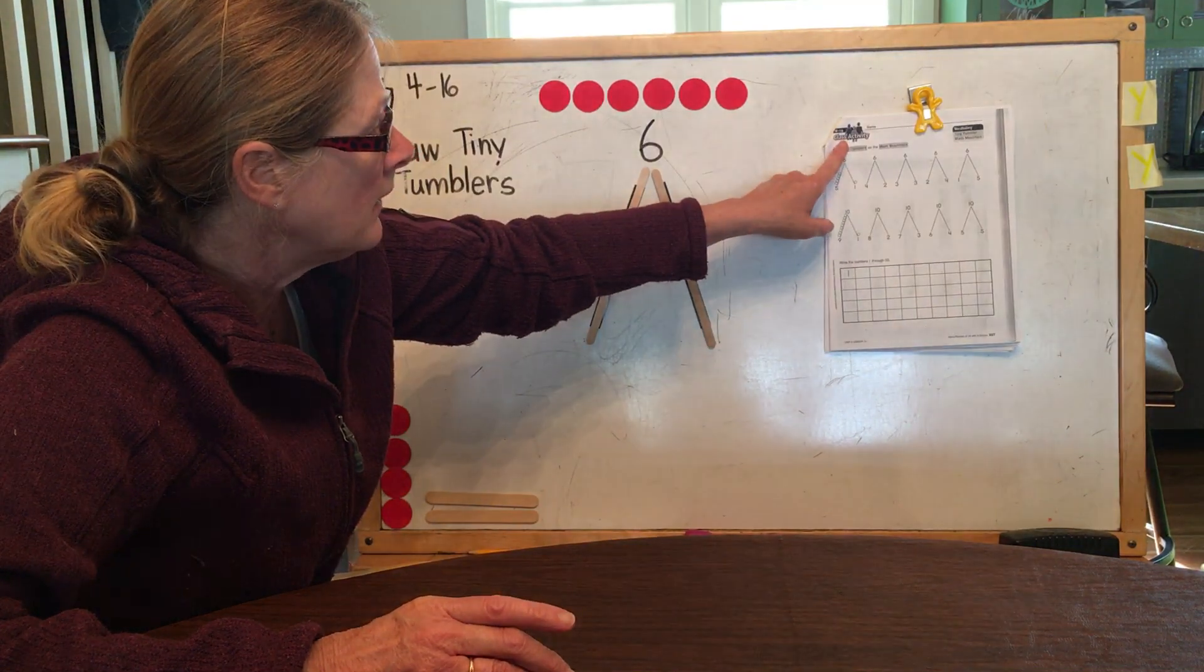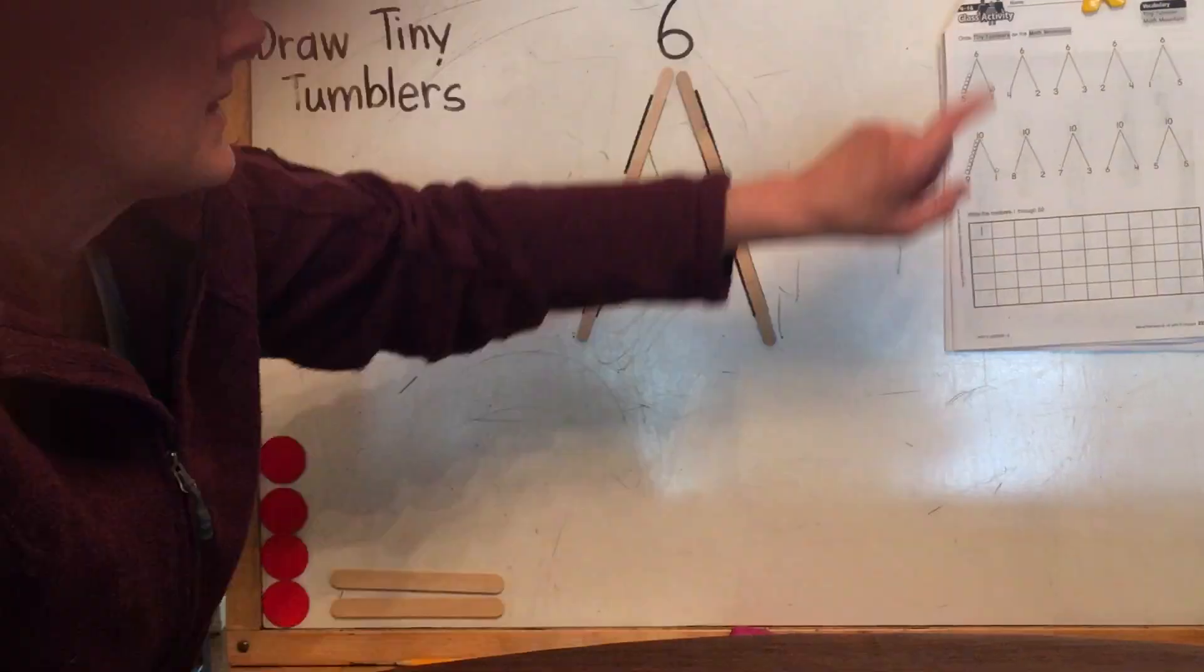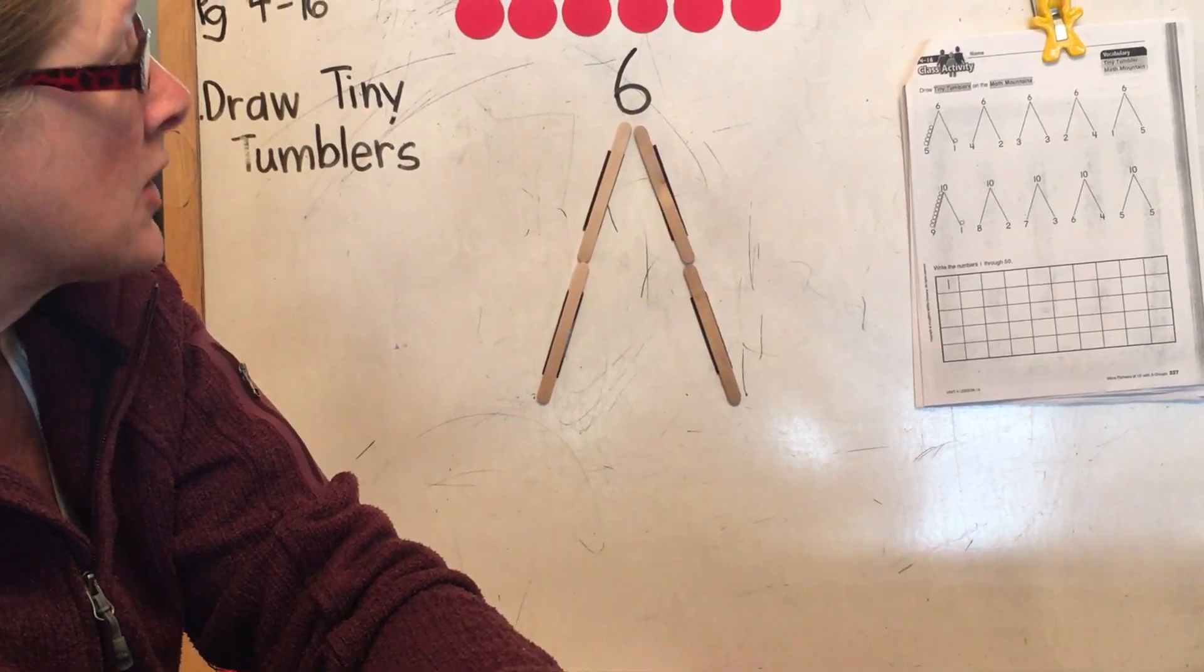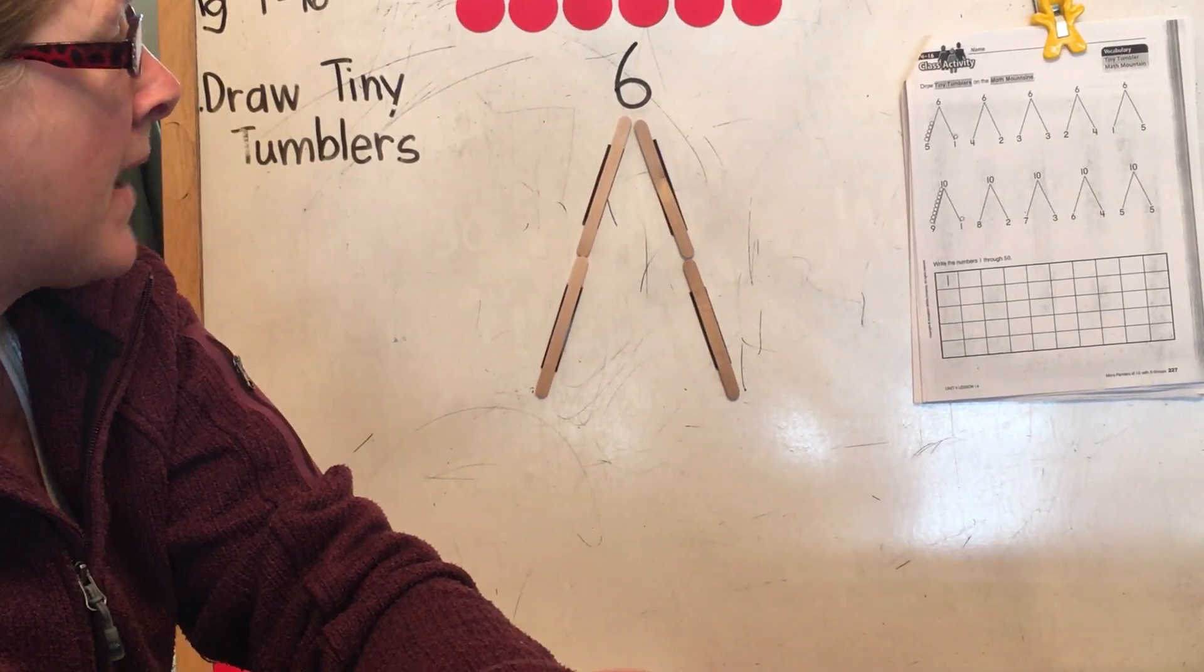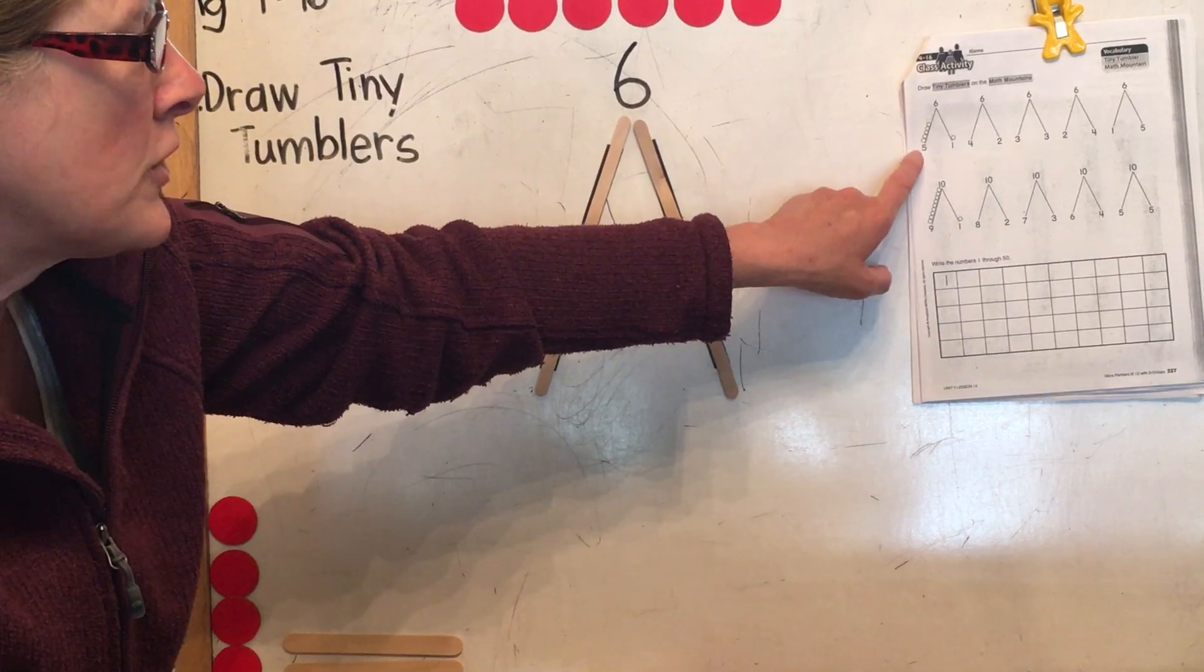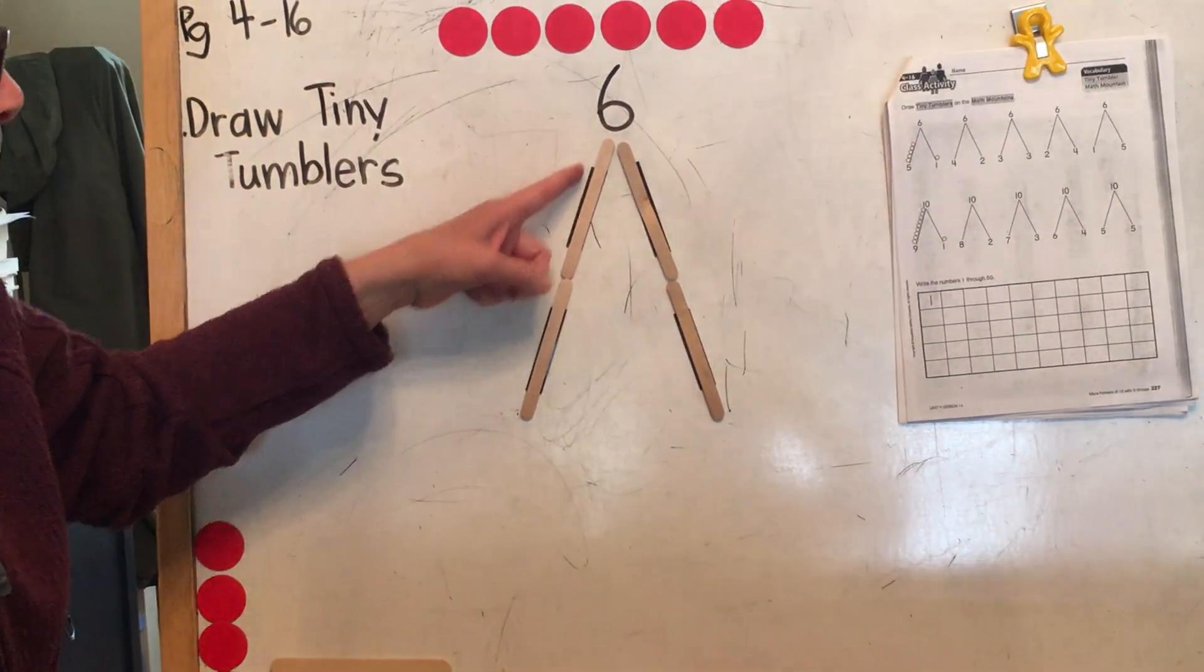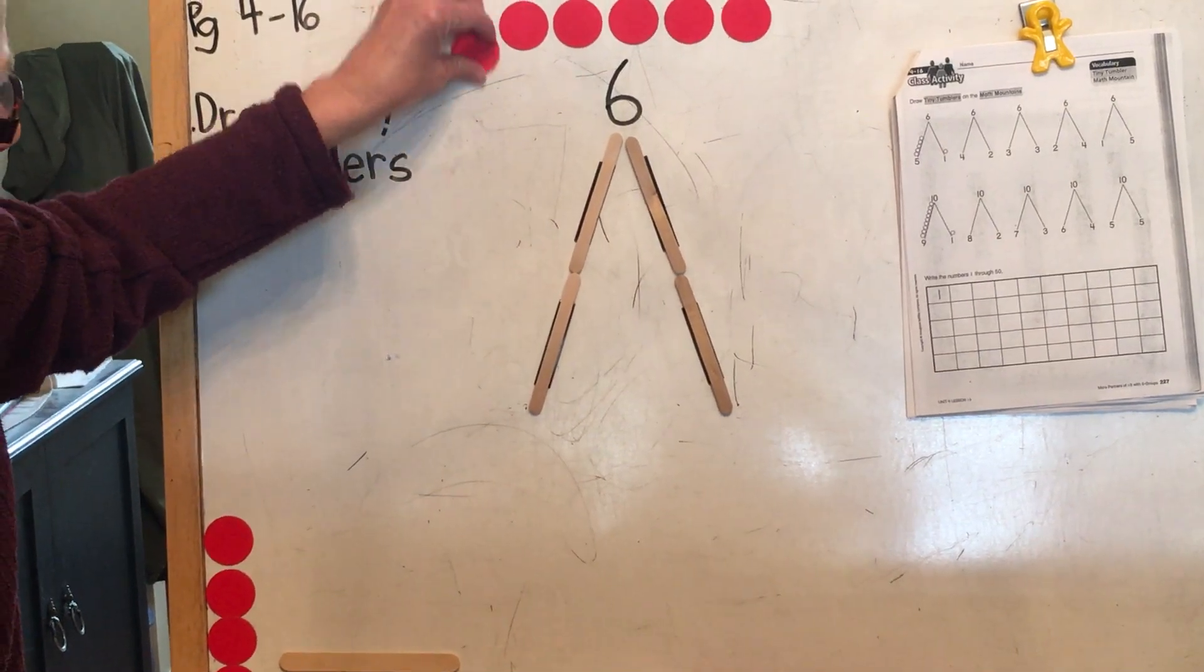So I'm following along on page 4-16. This is the worksheet that we'll be practicing on today. It says draw tiny tumblers on the math mountains. So on the first example five of the tiny tumblers went this way. So this is what we're going to do.